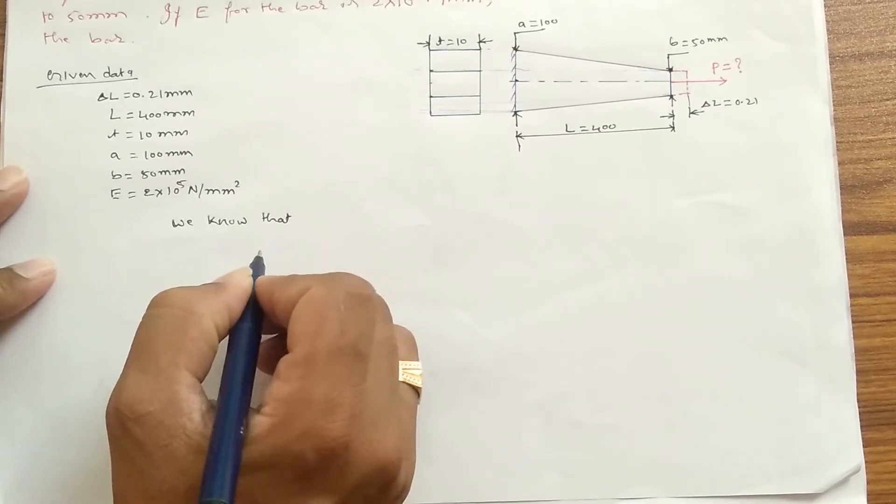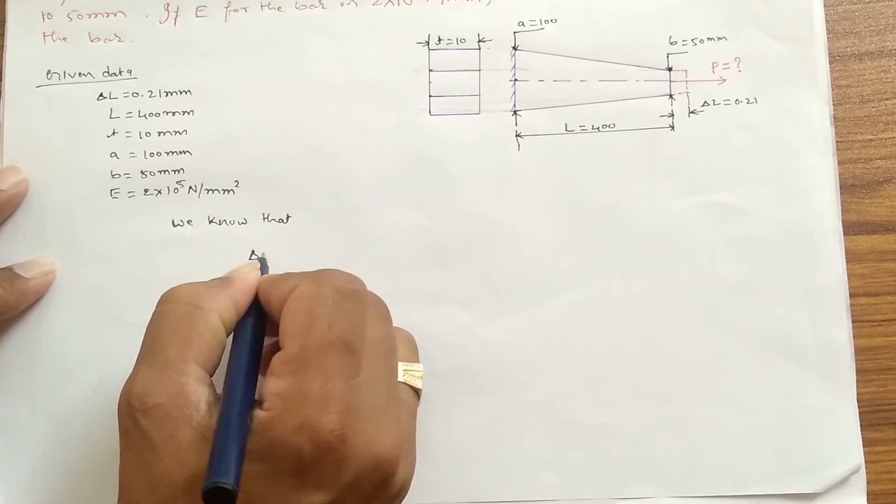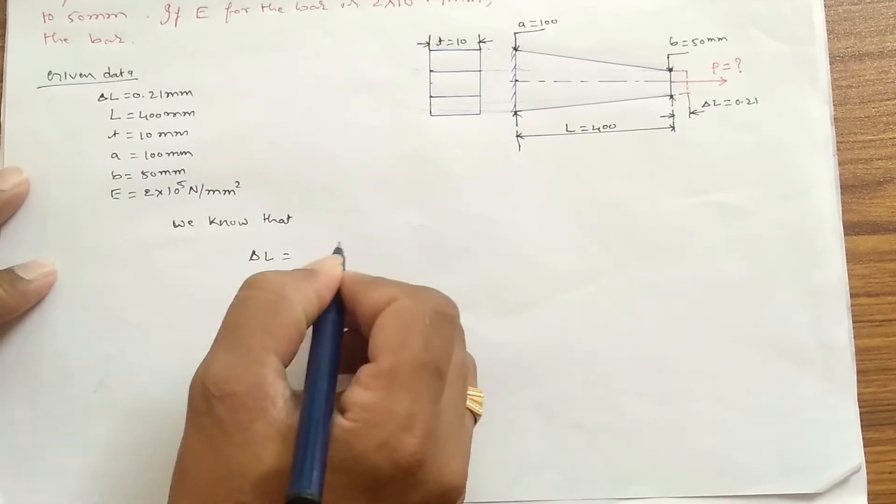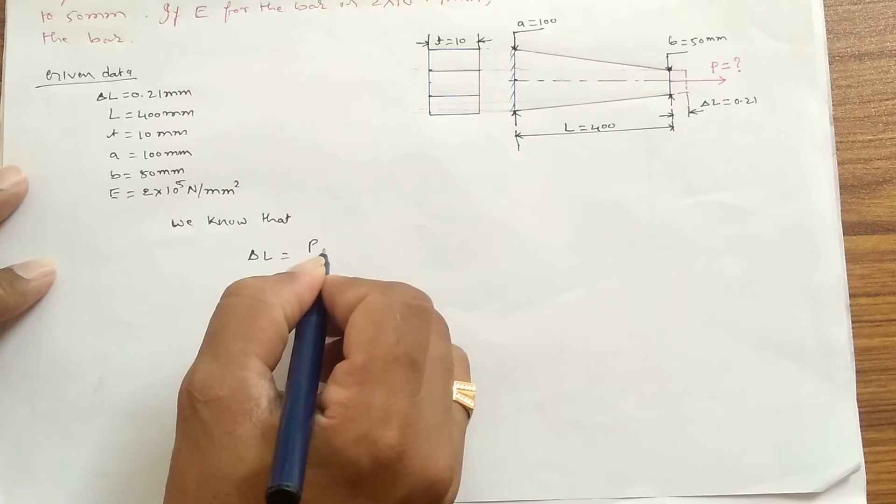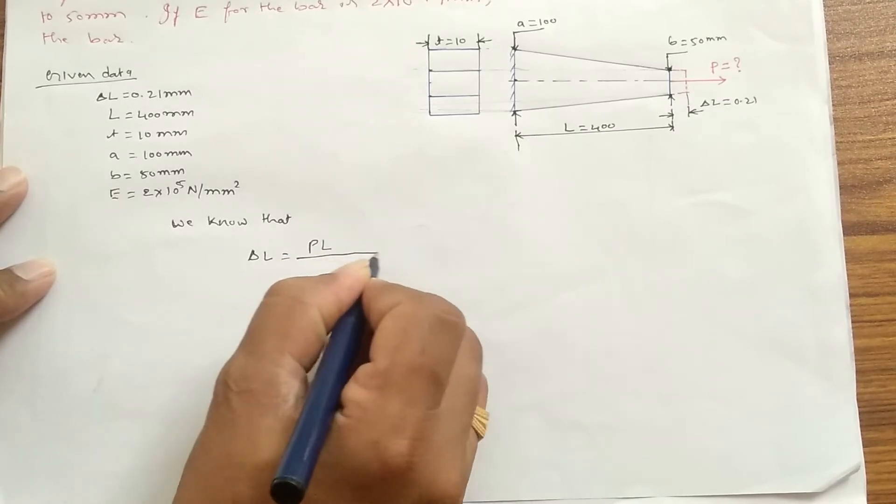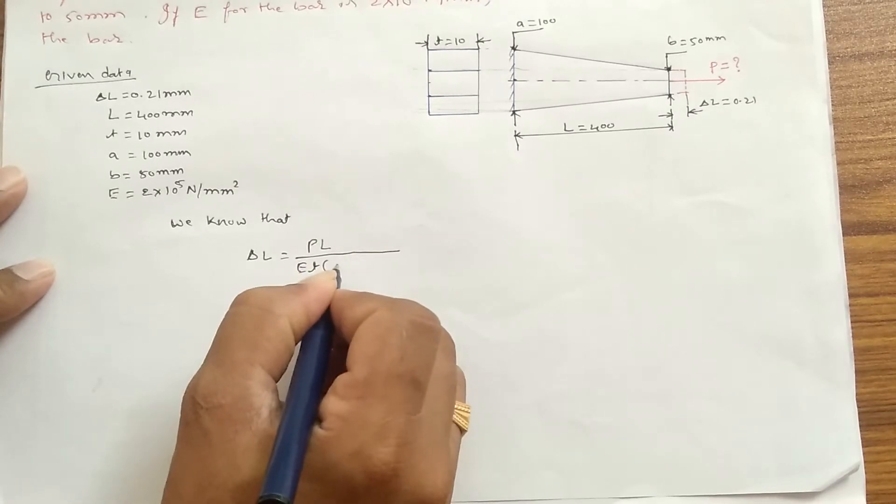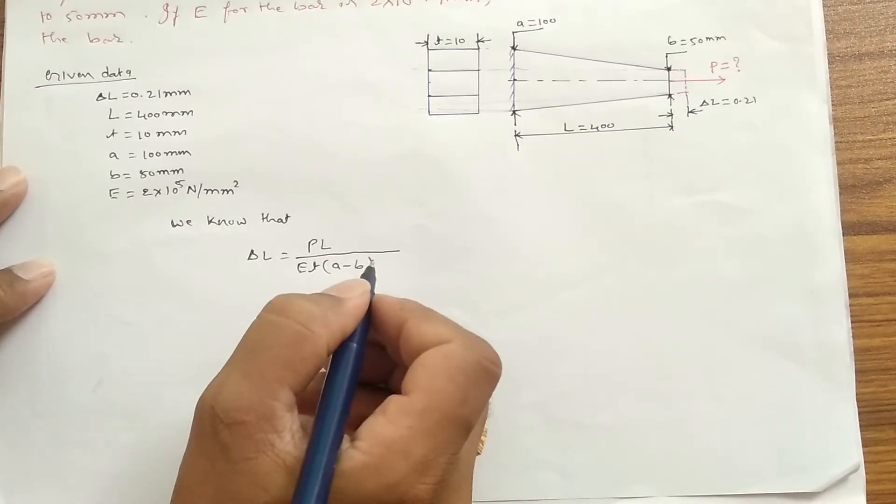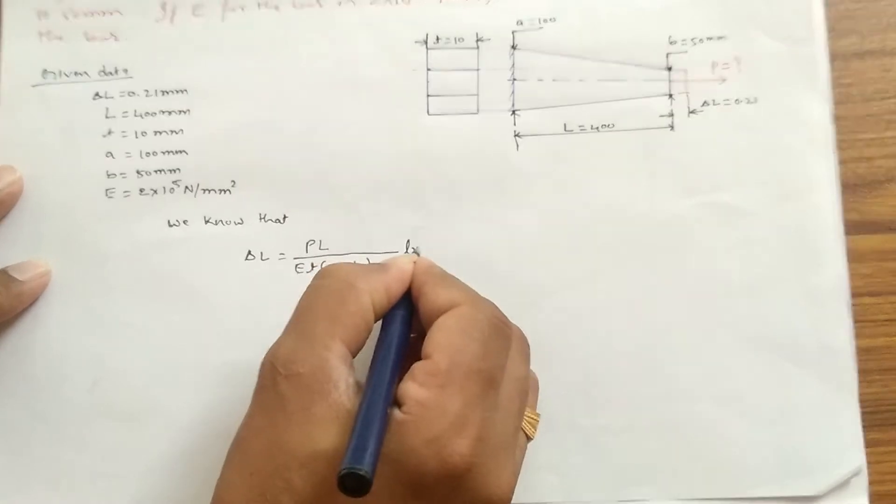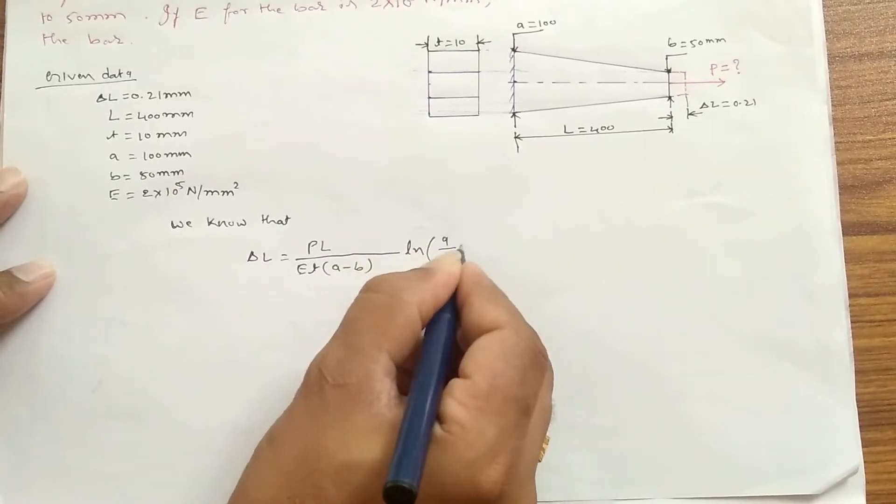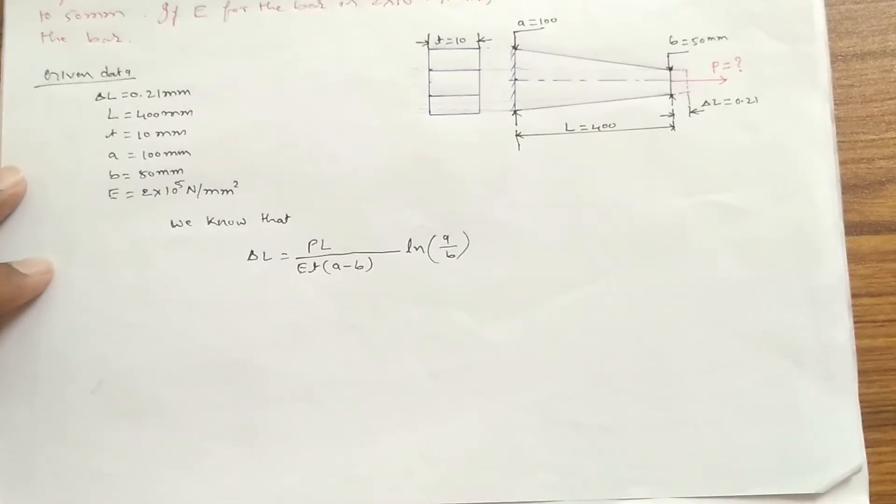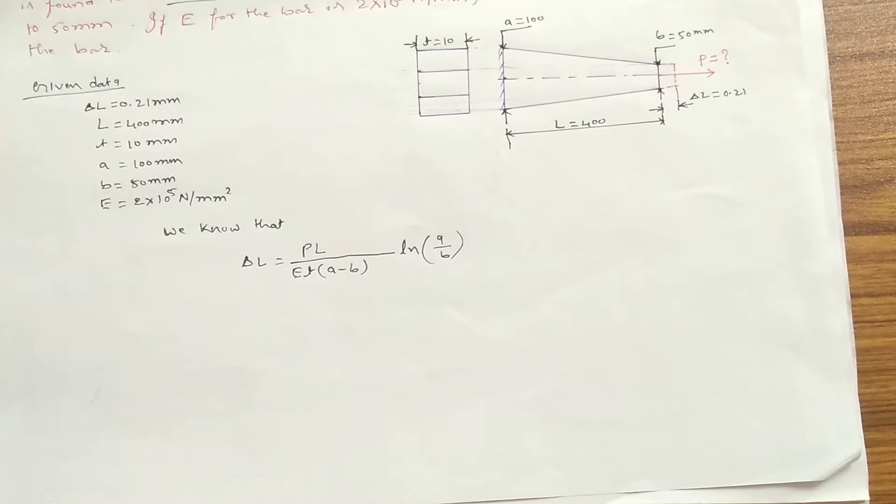Delta L can be expressed as P × L divided by E × T × (A - B) and ln of A by B. So this is the formula we use to find the change in length when it is subjected to axial load.